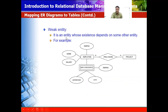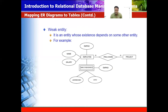Weak entity: it is an entity whose existence depends on some other entity. There is a parent entity, and the employee address is called the weak entity — an entity whose existence is dependent upon another entity.